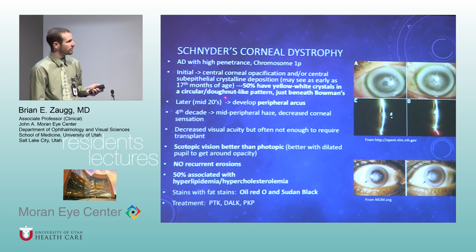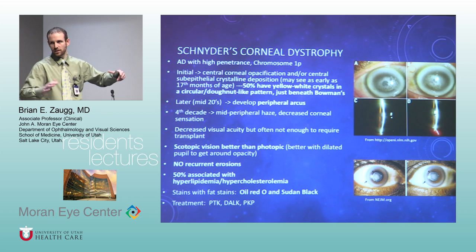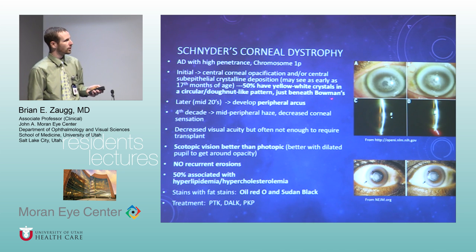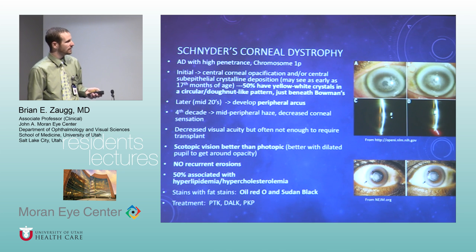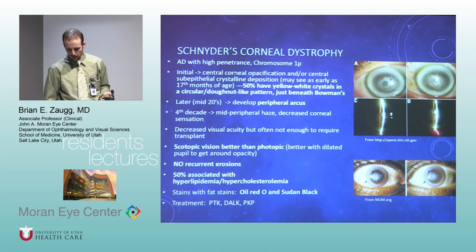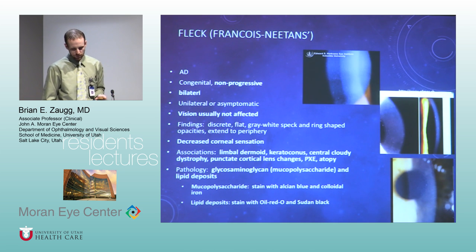Schnyder's corneal dystrophy: about 50% have yellow-white crystals outside the limbus with a clear space at the limbus, located just below Bowman's layer. Sometimes patients can see better at night. There is association with lipid problems — it stains with oil red O. Fleck dystrophy: glycosaminoglycan and lipid deposits, lots of associations — tiny changes that are hard to diagnose.